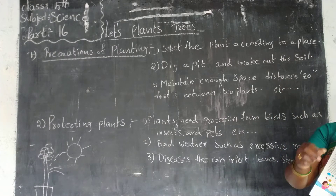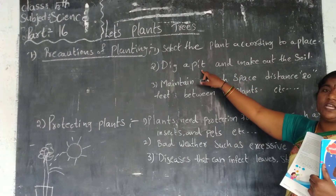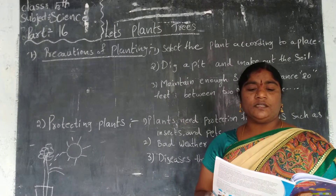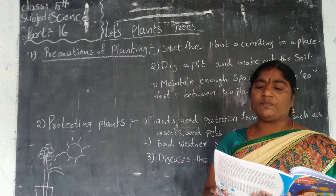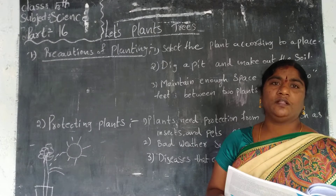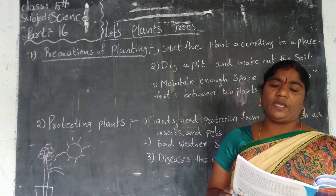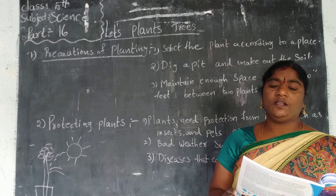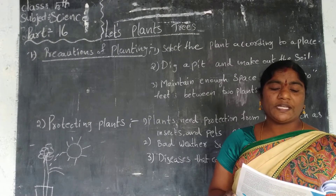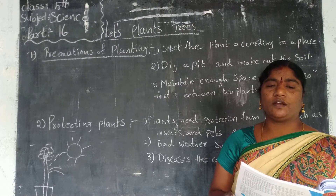The soil from deep inside the pit is not fertile. Make a heap of that infertile soil on the right side of the pit. While planting the tree, put the outer fertile soil over the tree roots.